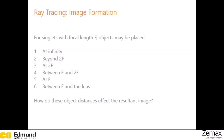The same lens may form an image differently depending on where the object is placed. We're going to look at a singlet with focal length f for objects placed at various locations: infinitely far away; beyond two times the focal length; exactly at two times the focal length; between the focal length and two times the focal length; precisely at the focal length; and between the focal length and the lens. We want to know how these different object distances affect the resultant image.